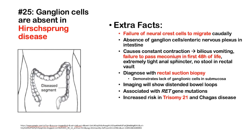They'll have an extremely tight anal sphincter and no stool in the rectal vault. You diagnose this with a rectal suction biopsy, which will show no ganglionic cells in the submucosa, because the neural crest cells were not able to migrate there. Imaging will show distended bowel loops because everything proximal to this contraction will be distended since nothing can move past it.